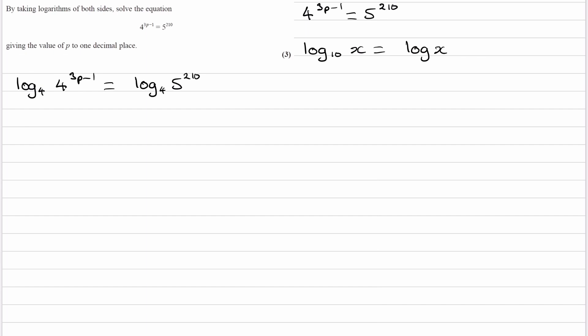So the reason log to the base 4 is useful is because of this rule. If you have log to the base of a of a to the power of x, this is the same thing as just x. So in other words, the log to the base of a and the a that we have here, they cancel out.